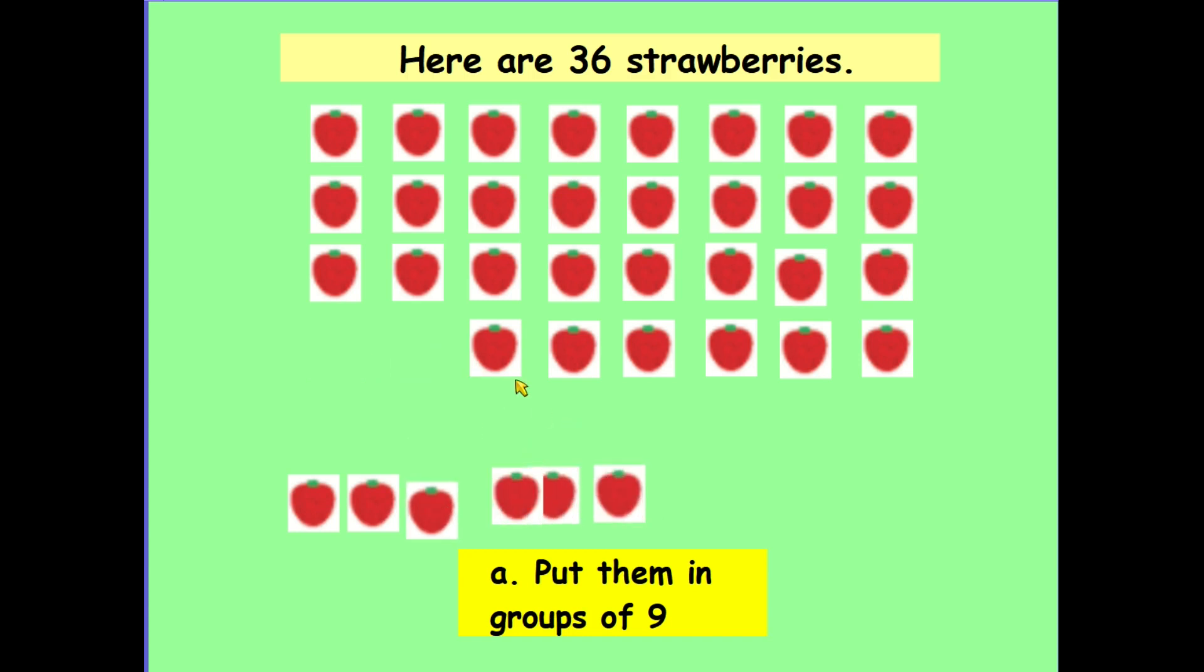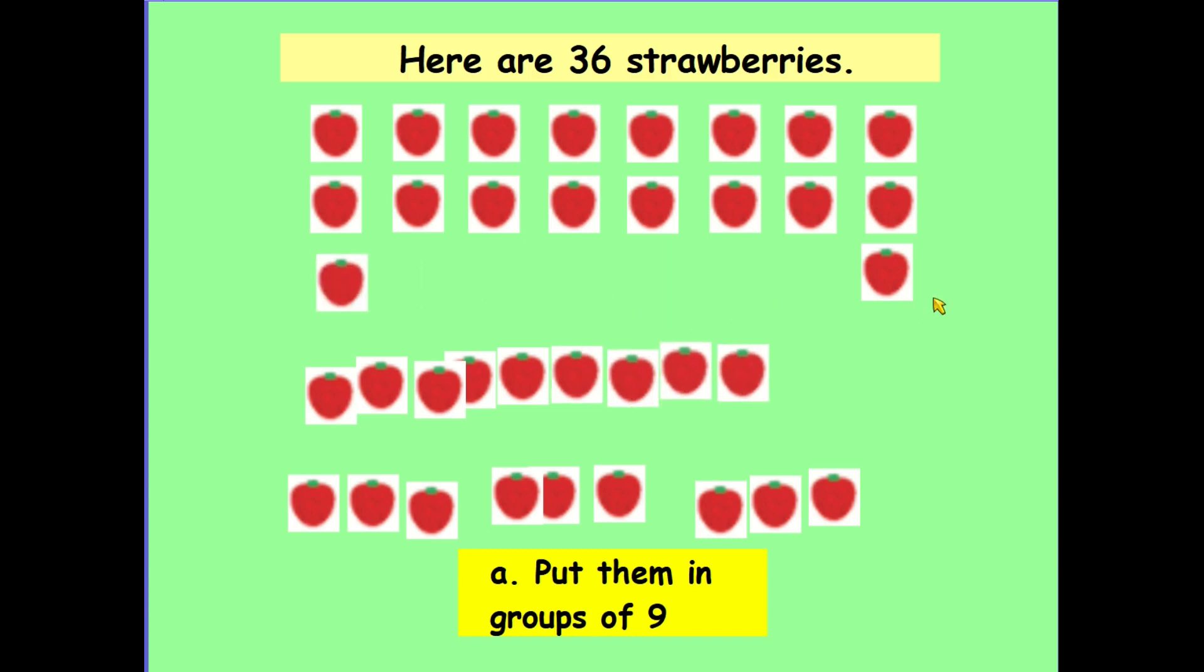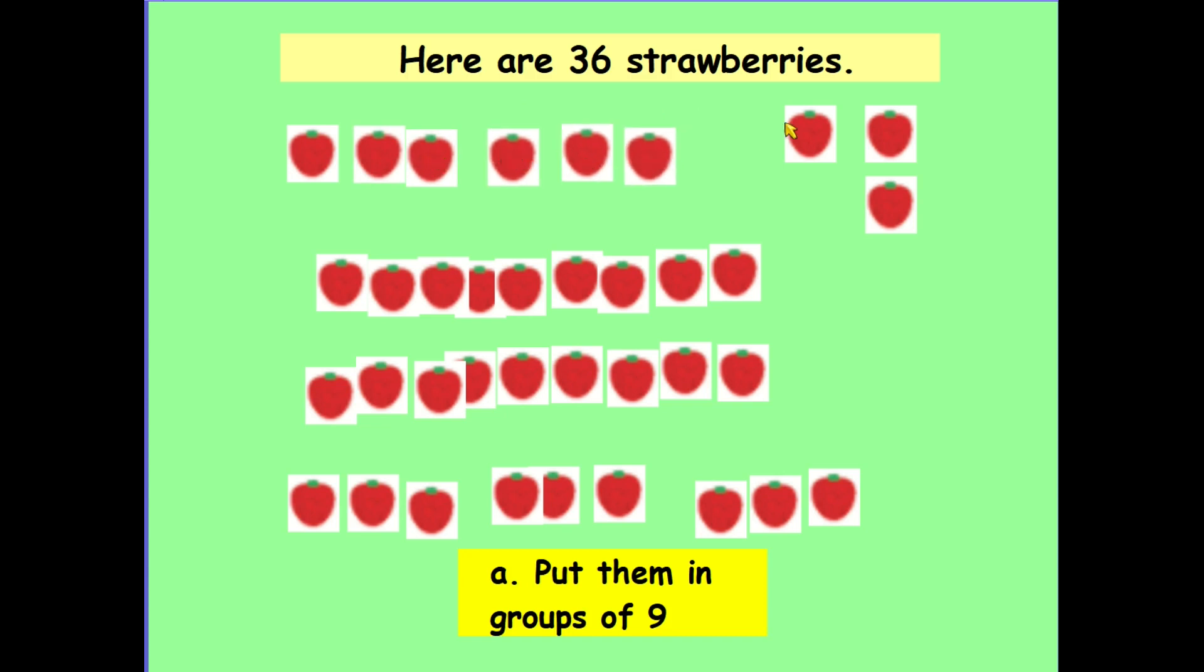The teacher counts out groups of strawberries, organizing them into sets of nine. After counting four, five, six, seven, eight, nine for the first group, she repeats the process three more times to create four groups total. I can see now that I have got four groups of nine. There's one group of nine, two groups of nine, three groups of nine, four groups of nine. So I know that 36 shared out into groups of nine will give me four groups.